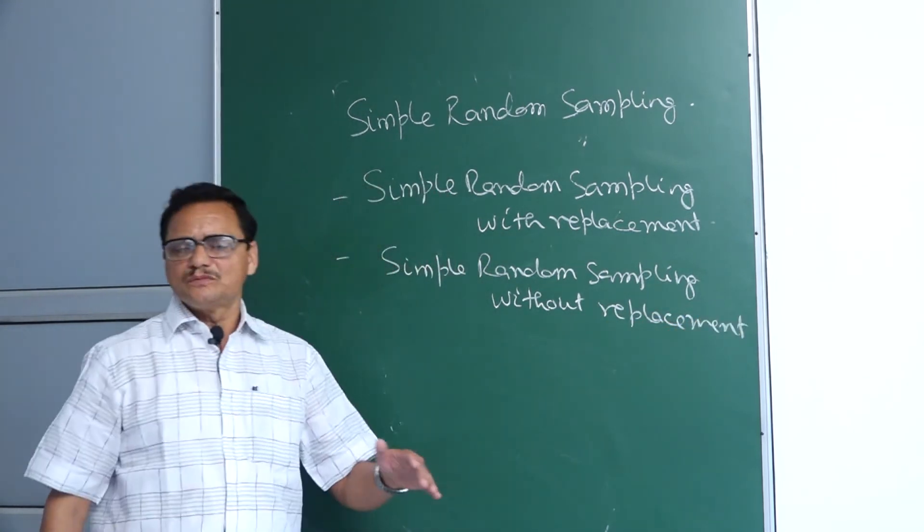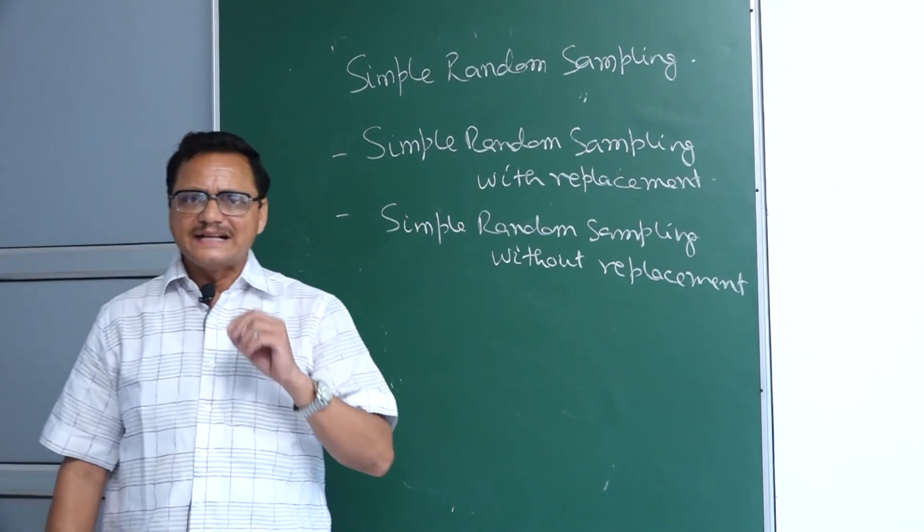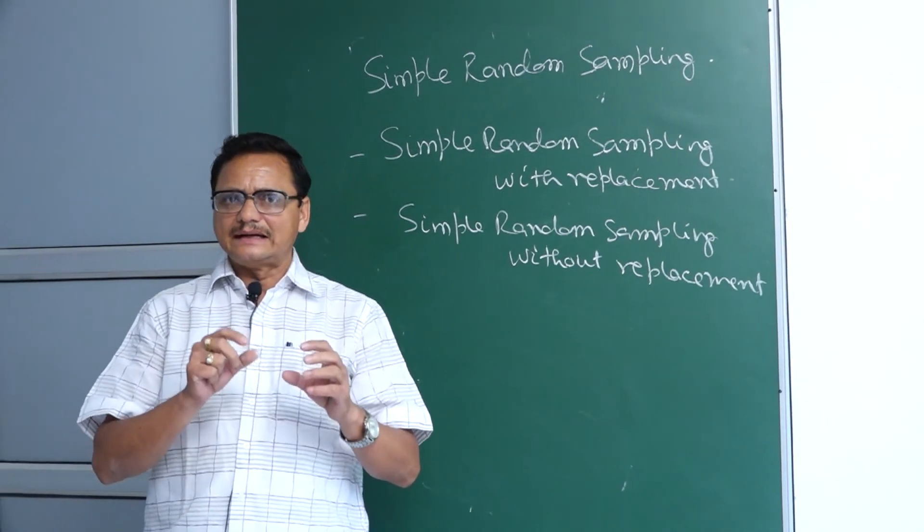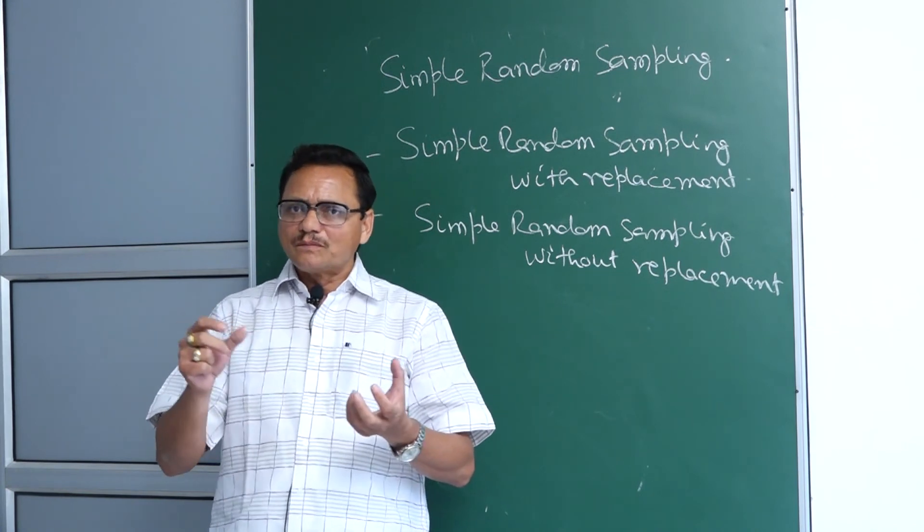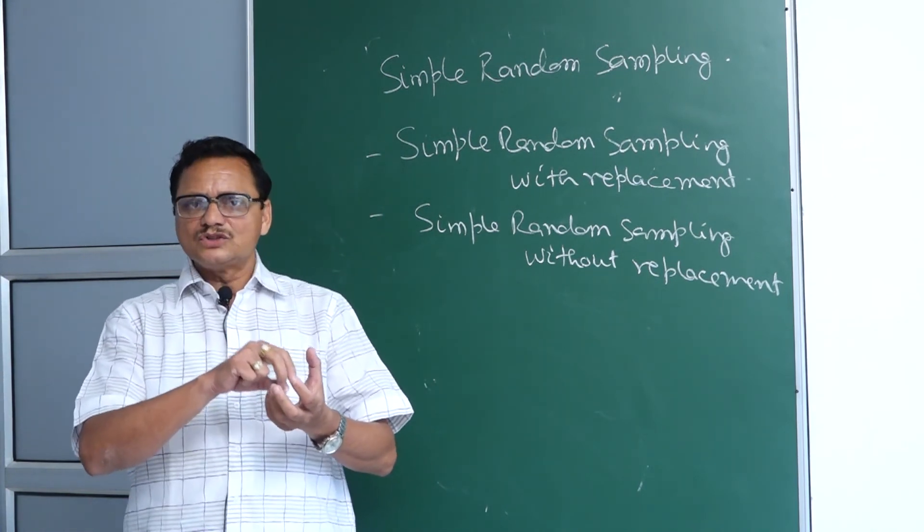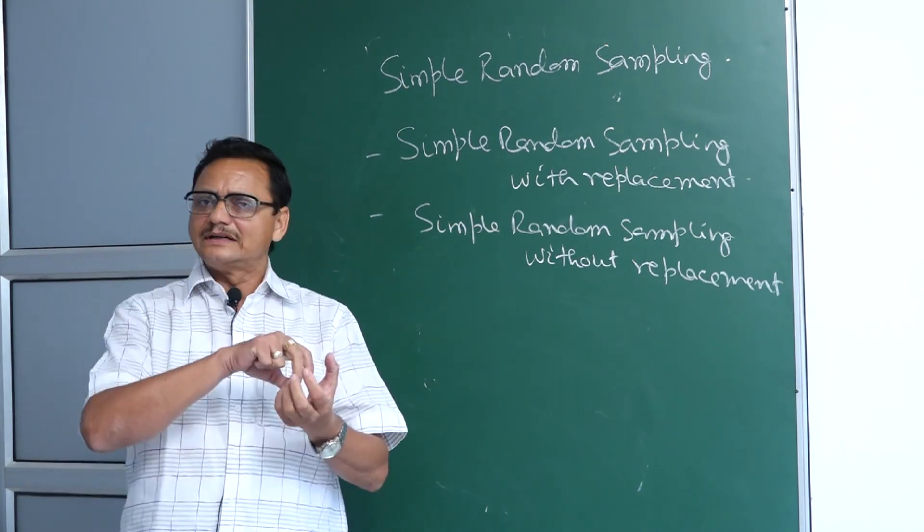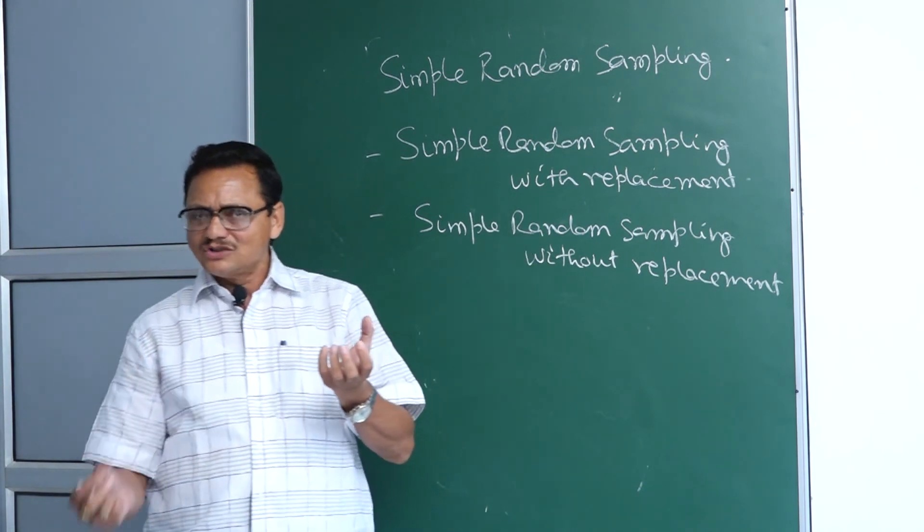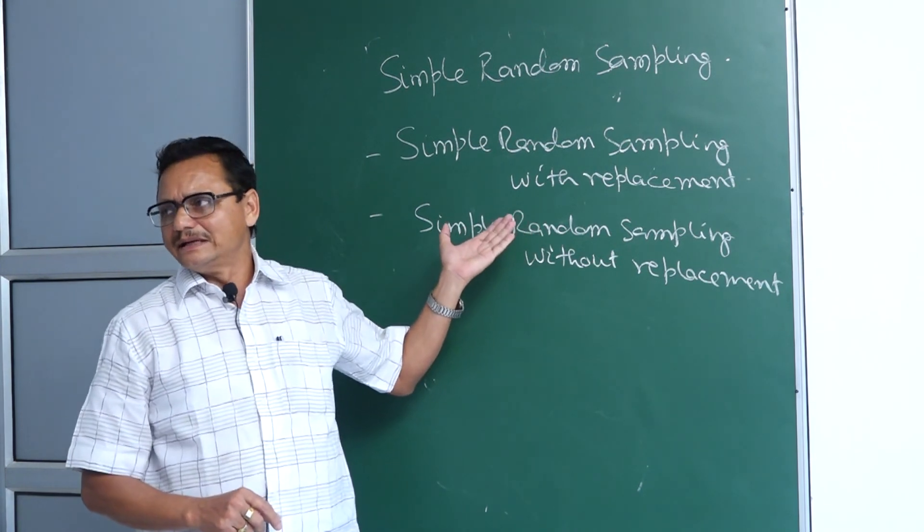What is with or without? Suppose there are hundred students. We want to distribute prizes to 10 students. We'll make slips from 1 to 100, mix them in a container, and draw one by one. When we take a number, if we don't put it back in the container, that is without replacement. If we put it back again, that is called with replacement.